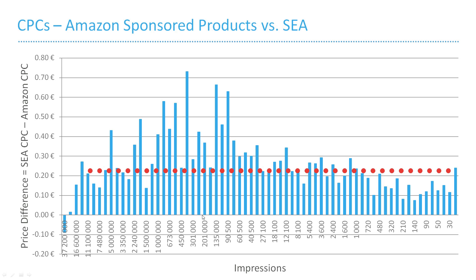If we assume that our Amazon conversion rate is equal or higher than our search engine conversion rate, then Amazon clicks are more profitable. The second finding is that the price differences are higher for keywords with fewer impressions. So long tail keywords are undervalued in this example, which is highly interesting, because by adding more long tail keywords to your ad account, you can decrease your average customer acquisition cost and thereby increase your profitability.